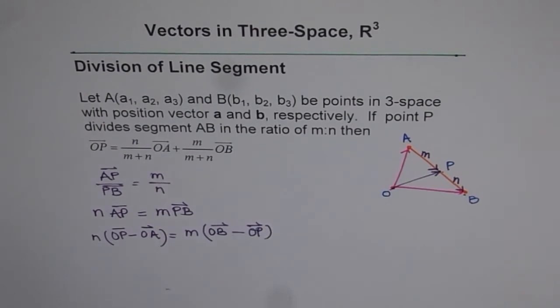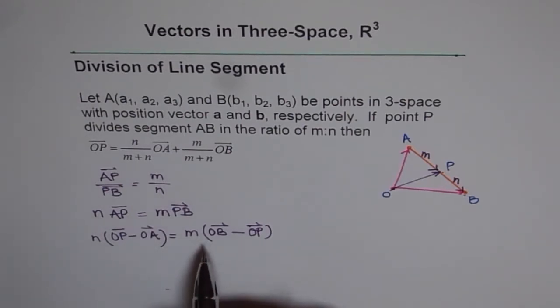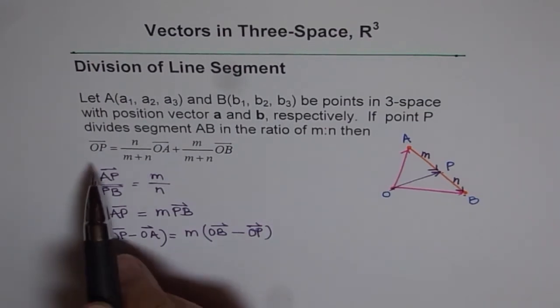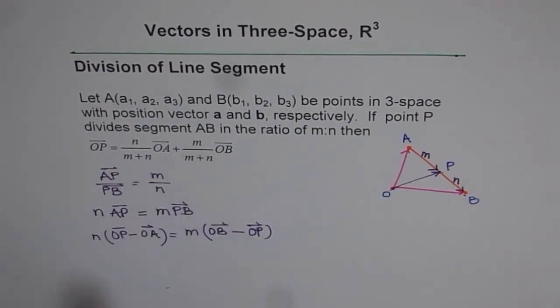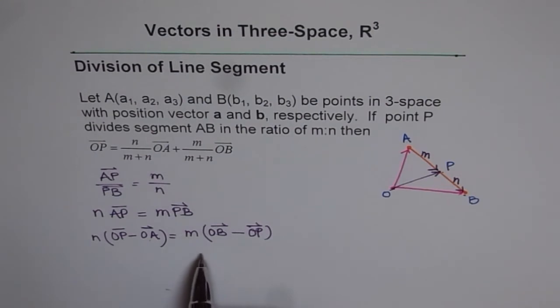So we can rewrite this in terms of OA and OP. Now, we can combine these terms, bring OP together. We need to find what OP is in terms of OA and OB. So we have OA, OB, N and M. We are close to our solution. The only thing is we have to put like terms together.